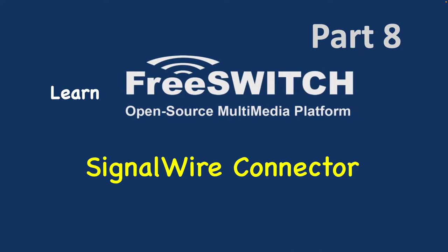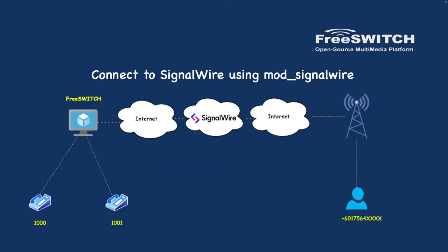If this is the first video you are watching, I suggest you watch the series from the first one, because this is a complete FreeSWITCH training series and my examples are based on previous videos. SignalWire is a SIP trunk provider that also provides other services beyond SIP trunking — they have their own APIs based on FreeSWITCH. Here we want to connect our FreeSWITCH system to SignalWire so that we are able to call a fixed line or mobile number.